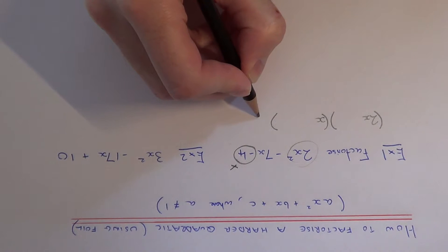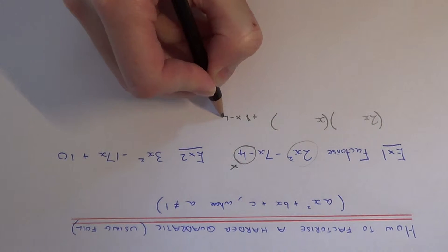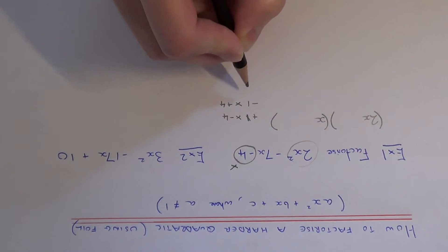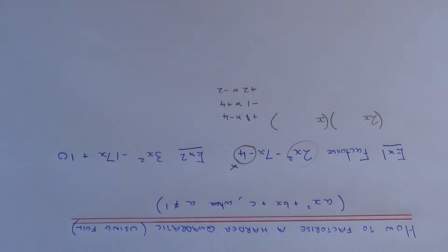The pairs that we can have are plus 1 times minus 4, minus 1 times plus 4, plus 2 times minus 2, and that's all the pairs of numbers that we can have.